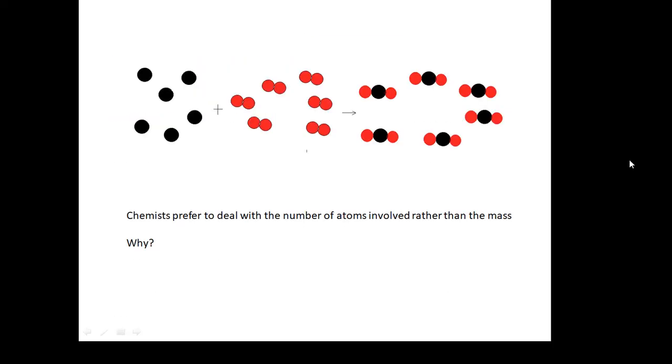Chemists prefer to deal with the number of atoms involved rather than the mass. And when I say the number of atoms, I mean the number of moles. Chemists like to deal with the number of moles. If you look at this diagram above, you've got six carbons, six oxygen molecules, and you're going to get six carbon dioxide molecules. We don't really care that much about the mass of the different things. It's the number of atoms or the number of moles which is important.